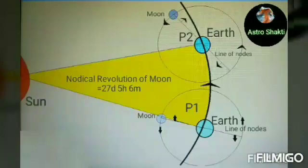So the Moon meets the same node before it completes one revolution, and it comes out to be 27 days, 5 hours, and 6 minutes. This is called the nodical revolution of the Moon. The Moon actually completes one revolution with respect to the Sun and Earth in 29 days, 12 hours, 44 minutes. This is called the synodic revolution of the Moon.